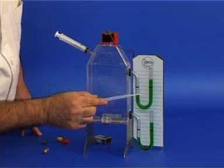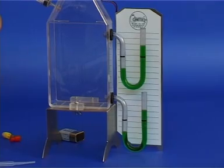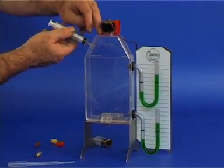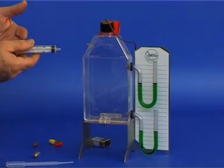You can measure the differences in the pressure by the different heights of the liquid in both sides of each manometer. Take out the syringe and note that the pressures inside the container and outside are now equal again.